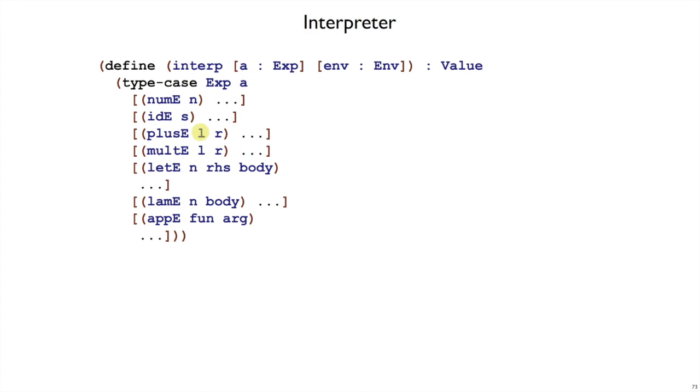We can just consider all the cases for the interpreter now. If we have a numE expression, that means we've already got an n. It used to be that we would just return the number n. We still want to return the value n, and to turn it into a value, we just wrap it with a numV.